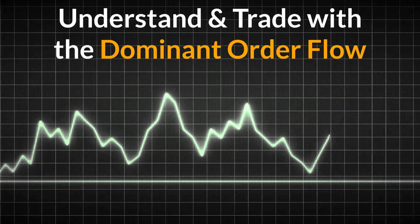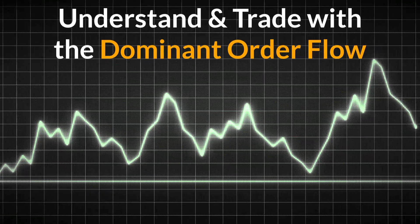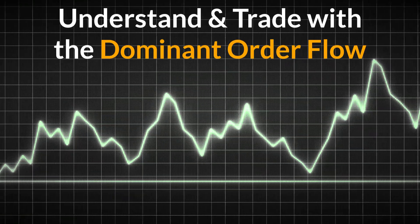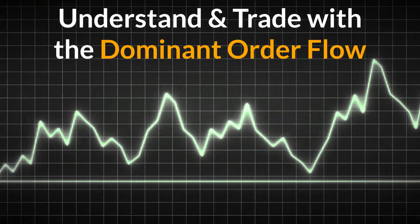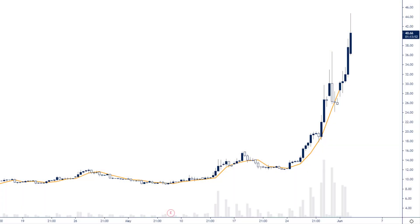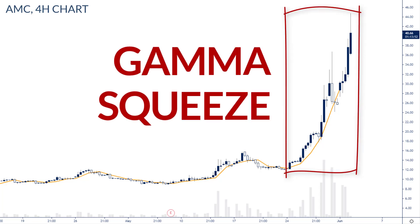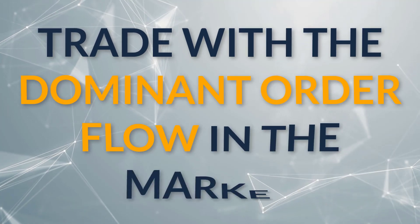If there's an imbalance on the buy or sell side of the order flow, I want to trade with that. If the option dealers are having to hedge their positions — like with AMC last week, we had this huge gamma squeeze where people started buying long options, the dealers got short options, and they had to buy AMC stock to hedge their position, creating a gamma squeeze — if that's what's happening in the market, I want to trade with that dominant order flow.